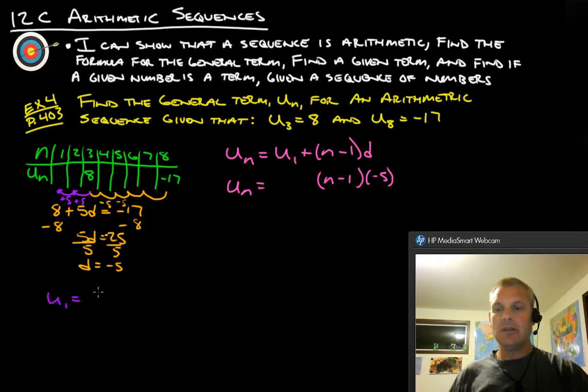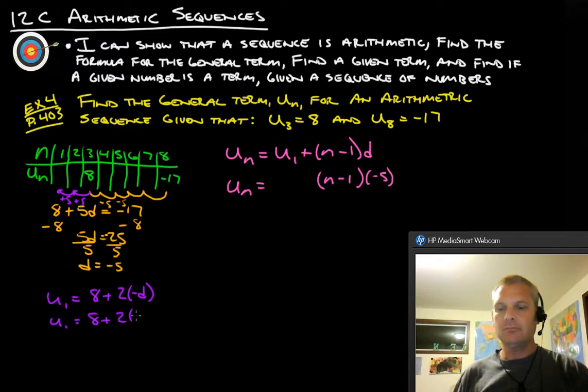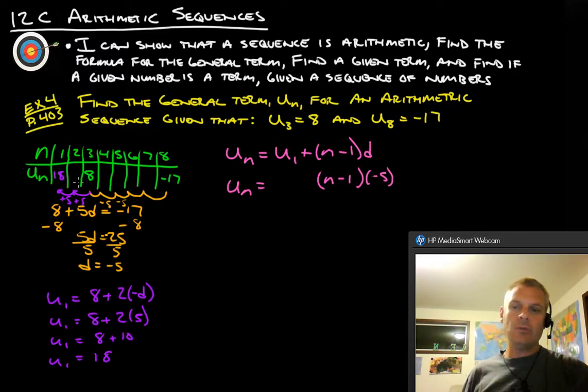So this direction here we were subtracting 5 each time. So if we're going to go the other direction, we're going to do the opposite of subtracting 5, which would be adding 5. So add 5 here, add 5 there. So really to figure out the first term, u_1 is going to be 8 plus twice the 5, so 8 plus 10, so our first term is 18. We now know that this here is 18 because going back this direction, subtract 5 gives us 13, subtract 5 gives us 8, so we know we're in good shape.